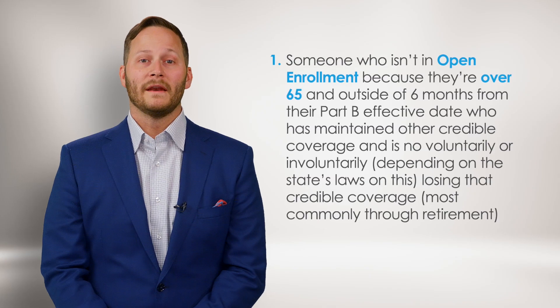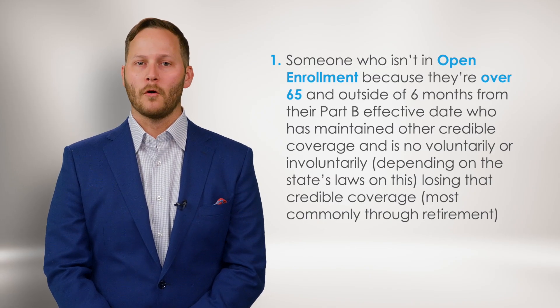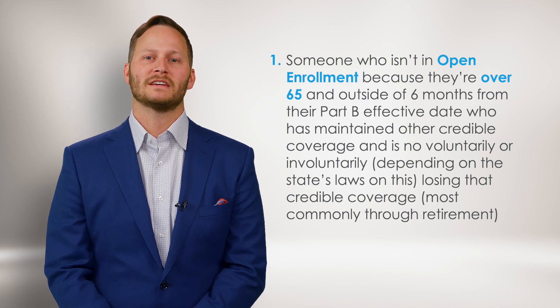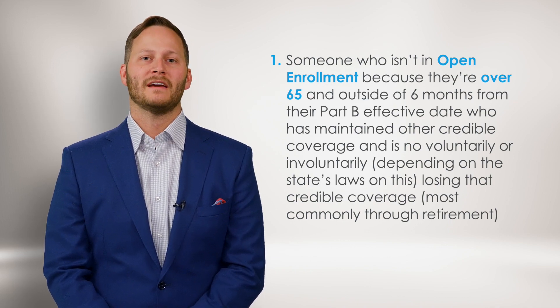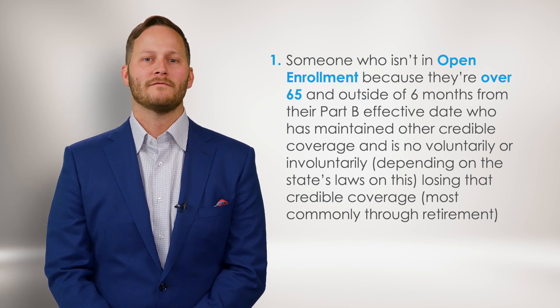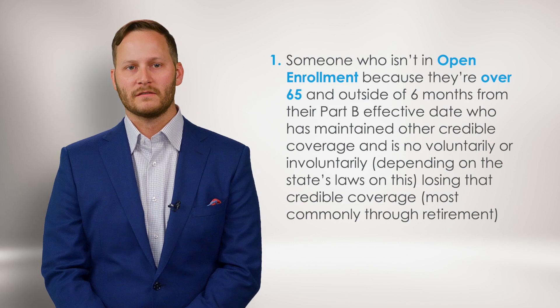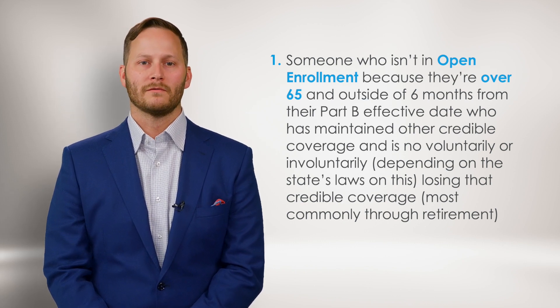There is one exception to this: guaranteed issue periods. GI periods, as they pertain to Medicare, are mostly related to Medicare supplements. One example is someone who isn't in open enrollment because they're over 65 and outside of six months from their Part B effective date, who has maintained other credible coverage and is involuntarily losing that credible coverage — most commonly through retirement. They would have a 63-day guaranteed issue period starting the day they lost coverage to get a Medigap plan without answering health questions.